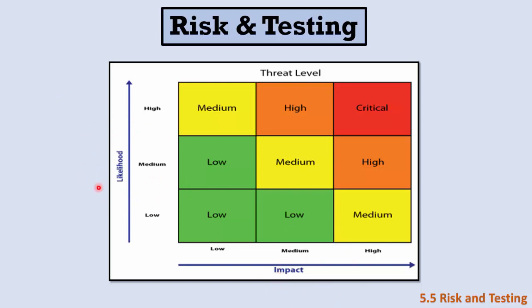The likelihood or probability is how often this risk is going to happen — does it happen every day, every week, every month, or maybe it never happens? The impact is, if this risk happens, what is its impact on our project and how will we be affected by it? So if we have a risk with low likelihood and low impact, we can say it is a low risk.